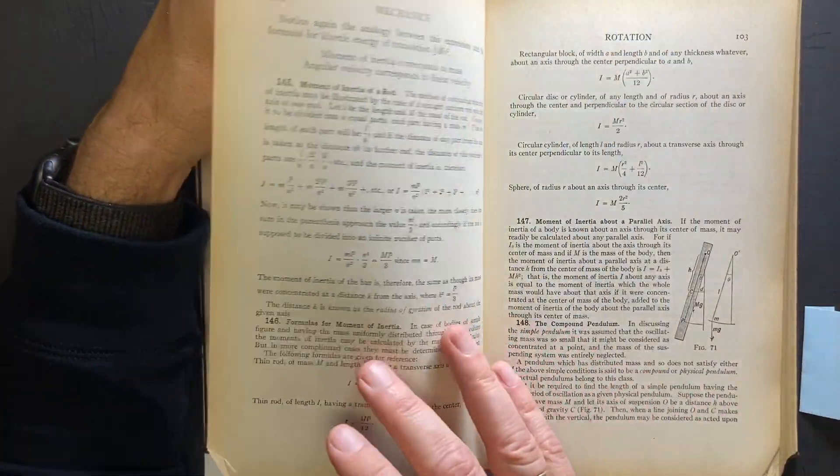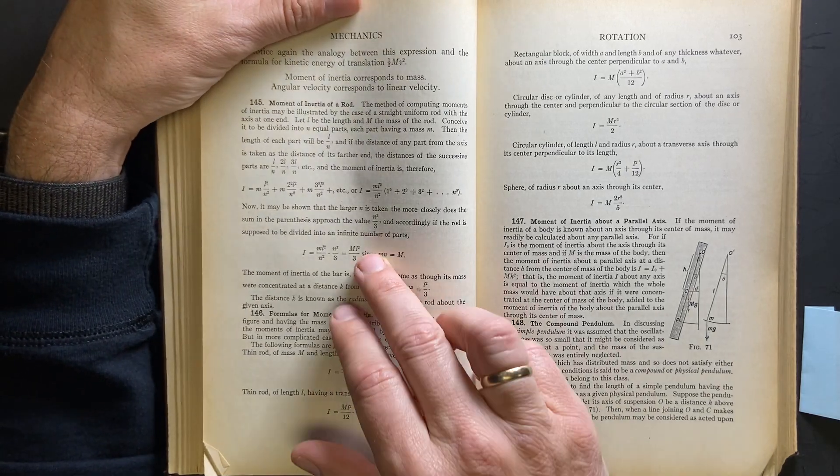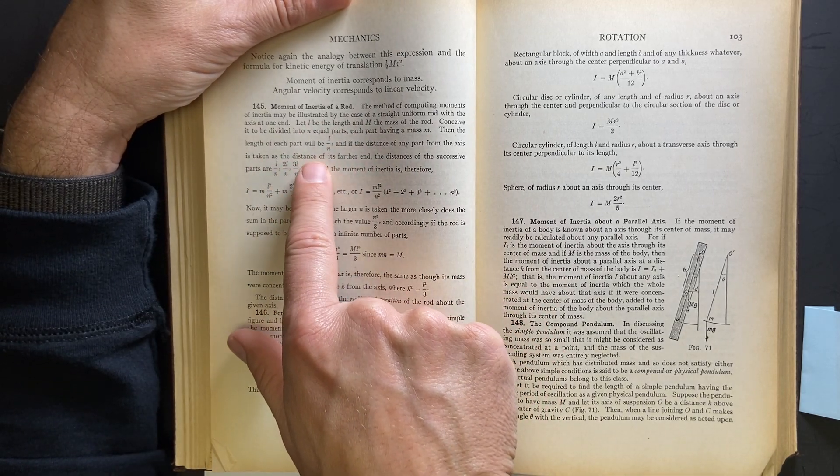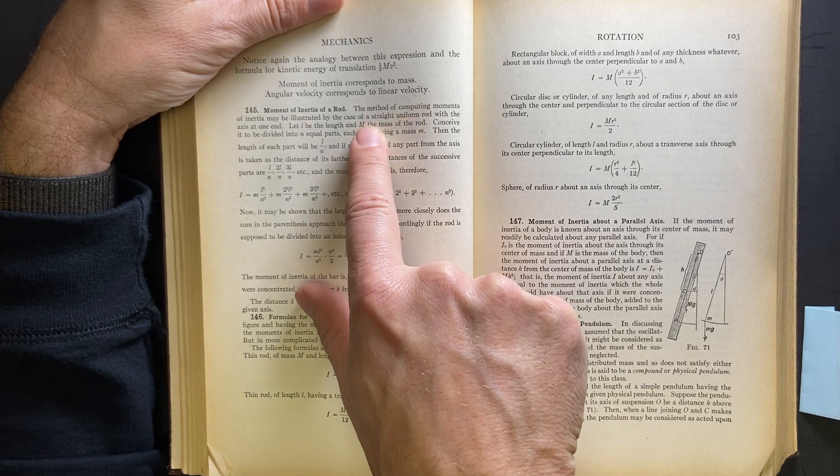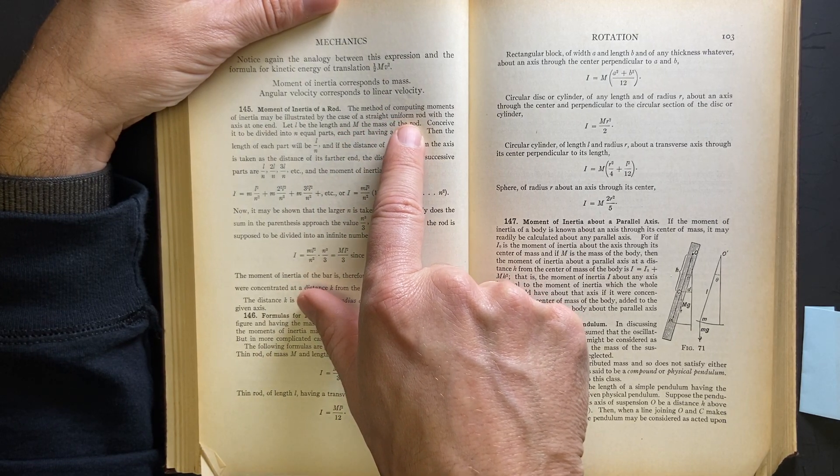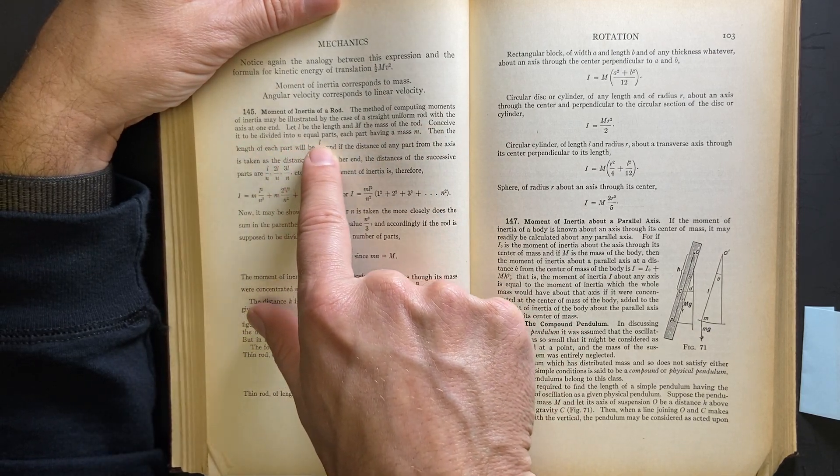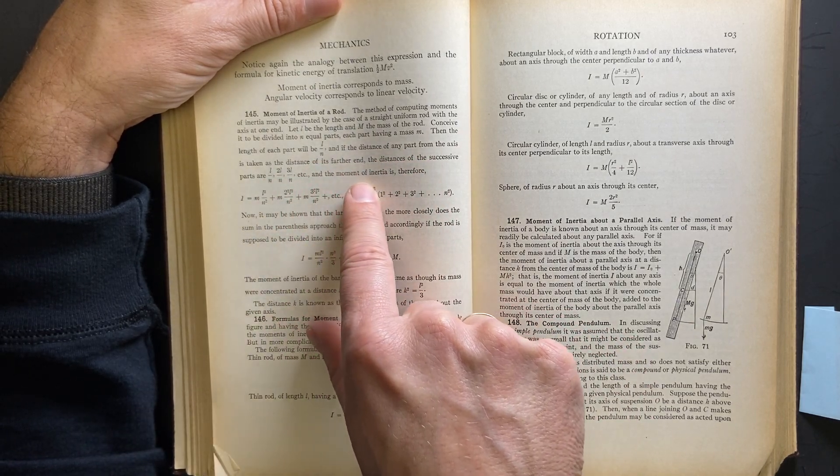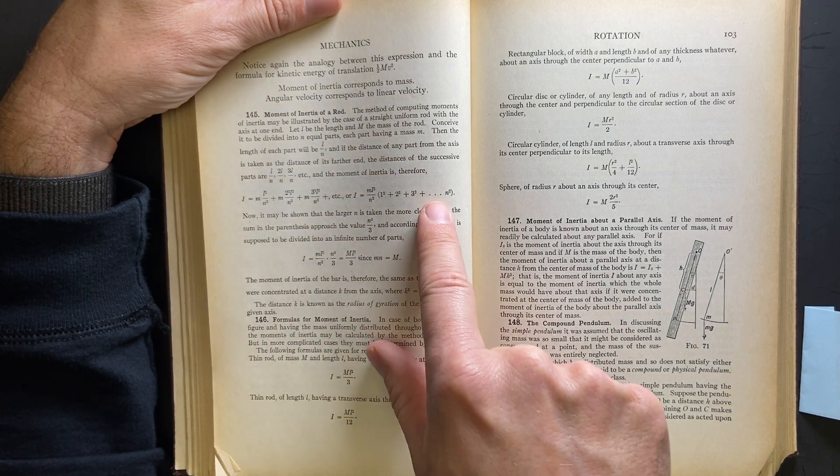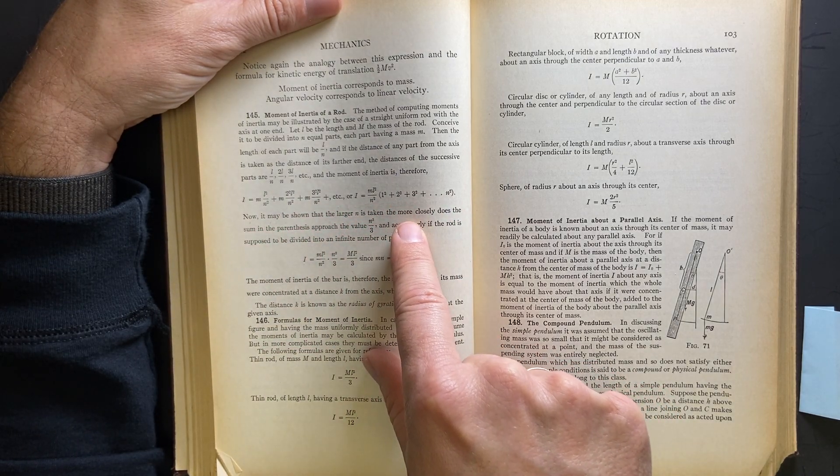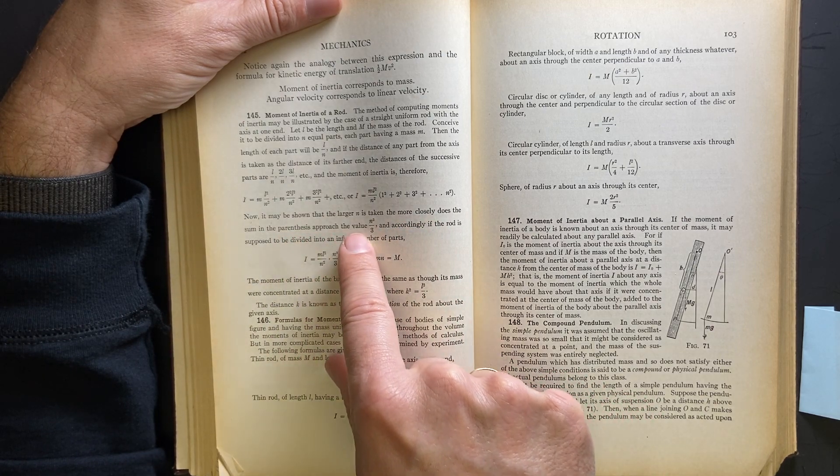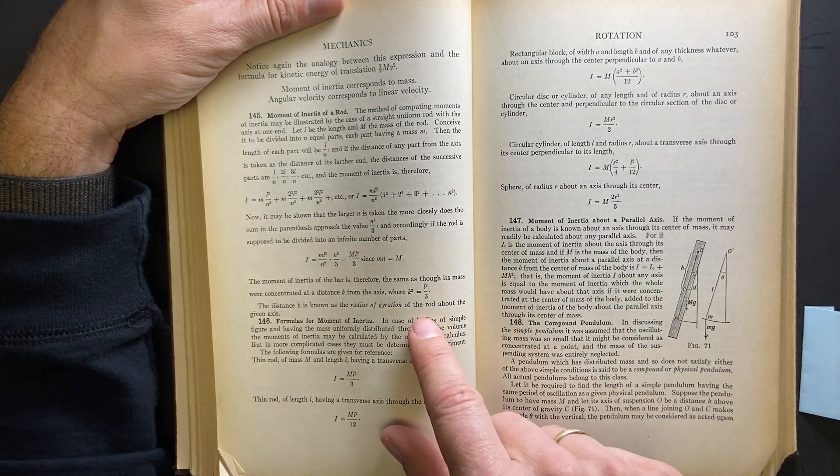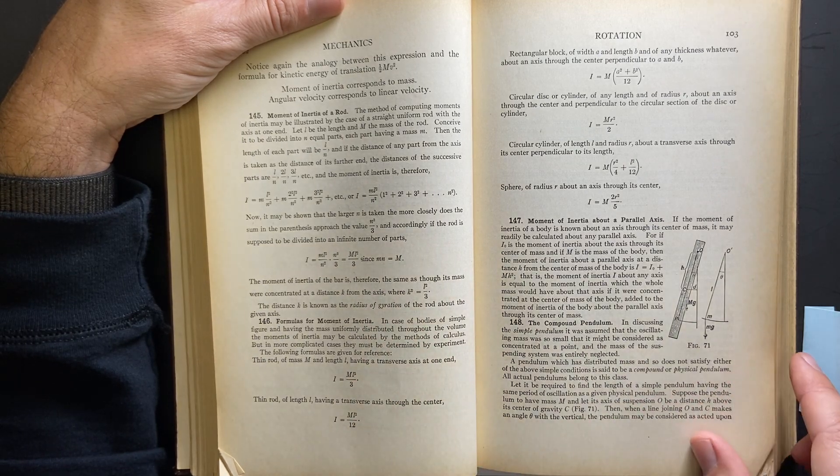Rotational kinetic energy. One half I omega. Calculates... See, now you're calculating moments of inertia of a rod. What does he do here? For a straight uniform rod, we would normally do this by integrating. Conceive it to be divided by n equals parts. Then the length of the part will be L over n. And the distance is that. So they do this numerically as a sum. If n is taken more closely, does the sum... I guess he just does it kind of plausibly as you break it into more and more pieces. It's interesting. And then he gives some formulas. Okay.